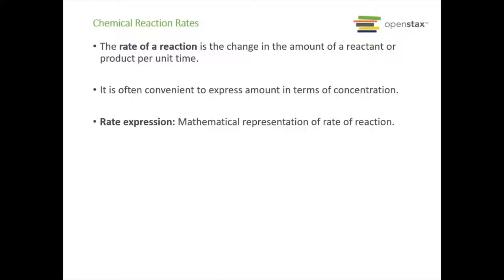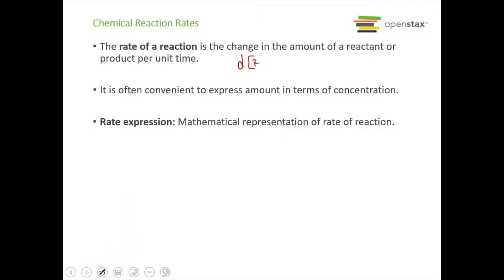The rate of reaction is the change in the amount of reactant or product per unit of time. For calculus people, you could think of this as d[reactant]/dt, or delta[reactant] over delta t. Most often you'll see the amount expressed as concentration, indicated by brackets, generally in molarity. A rate is also a measure of how a property varies with time — the rate of reaction is the amount of something over time.